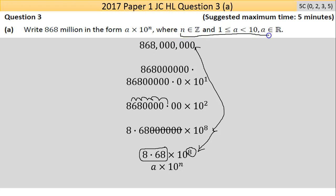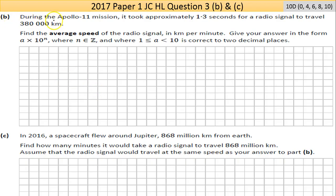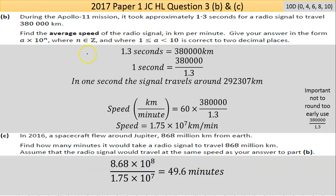Now part (b) says: During the Apollo 11 mission, it took approximately 1.3 seconds for a radio signal to travel 380,000 kilometers. Find the average speed of the radio signal in kilometers per minute. Give your answer in the form a times 10 to the power of n—scientific notation again—with a between 1 and 10, and round to two decimal places. There's an awful lot going on here in terms of things you have to do and watch out for.